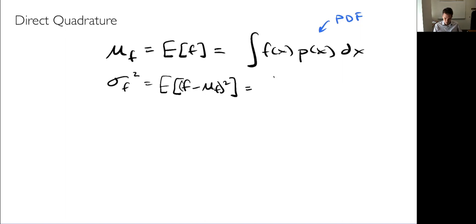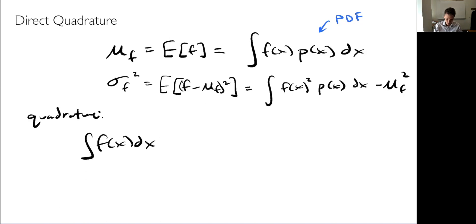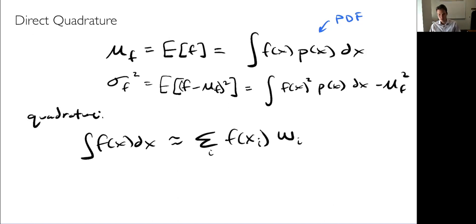Quadrature means we approximate an integral — which requires an infinite number of points — as a discrete summation where we evaluate our function at some discrete points and multiply by associated weights. The weights and locations we choose vary depending on the method. For example, a trapezoidal rule breaks the domain into segments approximated as trapezoids. Other methods include Clenshaw-Curtis, Gauss-Konrod, and adaptive methods — all differing in how they choose collocation points and associated weights. This is fairly straightforward in 1D.